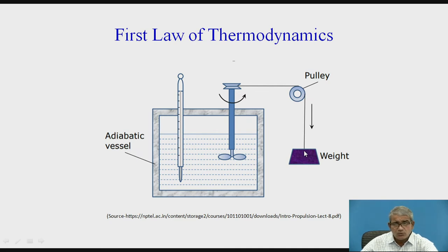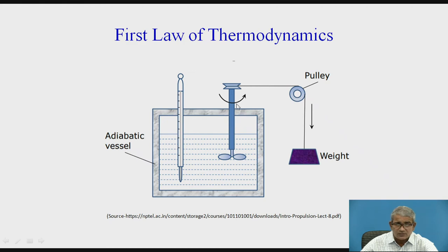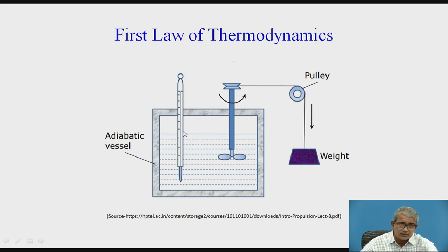The weight is allowed to move from height H1 to height H2. Due to gravity force, it moves from level 1 to level 2. When the cord moves downward due to gravity force, through the pulley arrangement, the stirrer gets rotated. When the stirrer gets rotated, the temperature of the water is increased. When the temperature of water is increased, that is noted in the thermometer — that is T1 rising to T2.